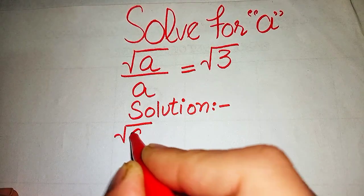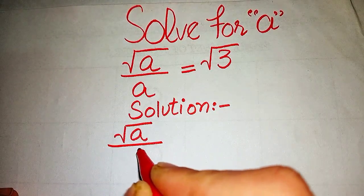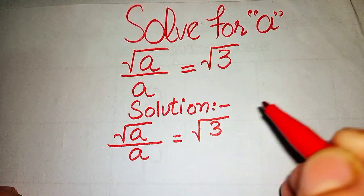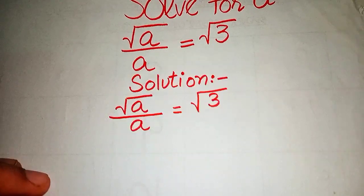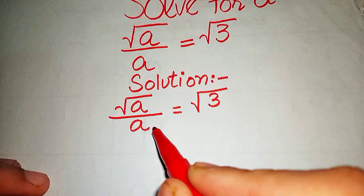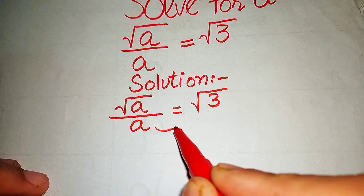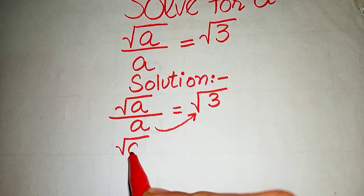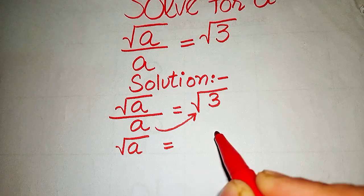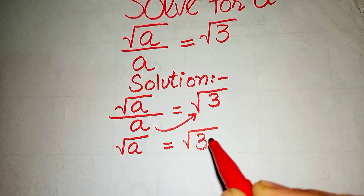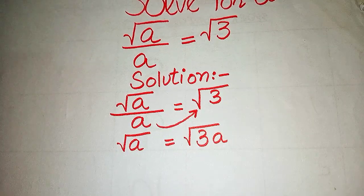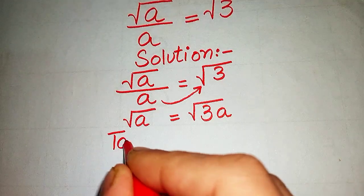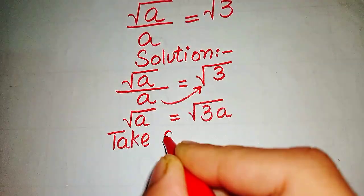We write the equation as √a / a = √3. When we take 'a' to the right side, the equation becomes √a = √(3a).